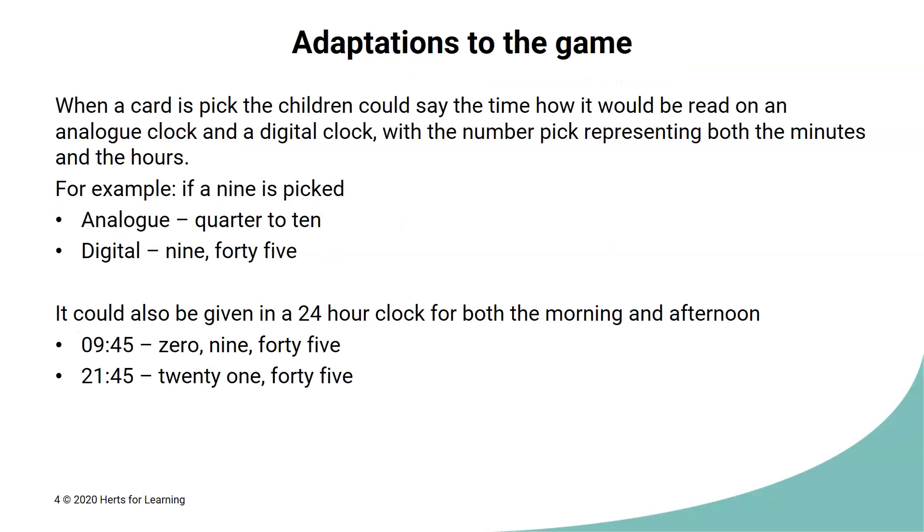In our version of clock patients, we've already made an adaptation to the original game, getting the children to say the minutes past and the minutes to, as well as recognizing the hour number. In addition to this, you could also get them to think about both the analogue and the digital time they're representing. So for example, if a nine is picked, that nine can represent both the hour and the minutes and they can tell you what that time would be on an analogue clock. So we'd normally read that time as quarter to 10, but on a digital clock, we'd say 9.45.